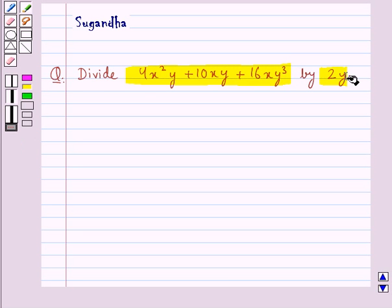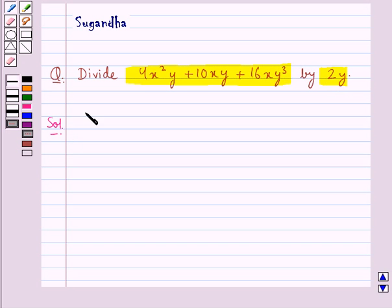So in this question we have to divide the given polynomial by the given monomial. Let's see the solution now. You are supposed to divide the polynomial 4x square y plus 10xy plus 16xy cube by the monomial 2y.